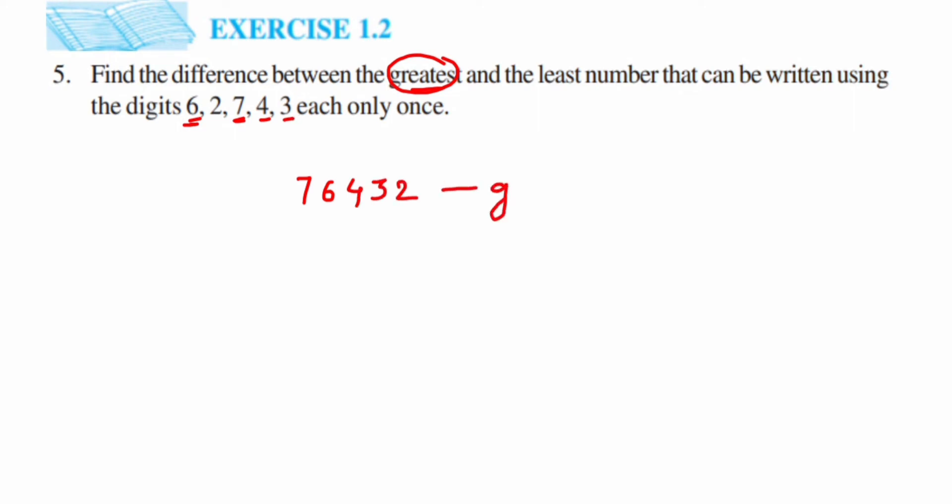The smallest digit is 2, then 3, then 4, then 6, and finally 7. Or you can just reverse the greatest number. So the smallest number is 23467. Now they're asking us to find the difference.